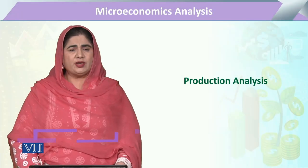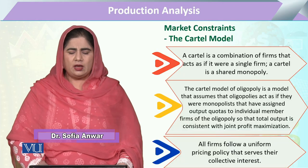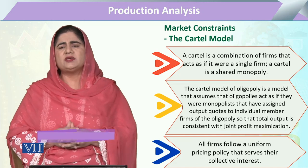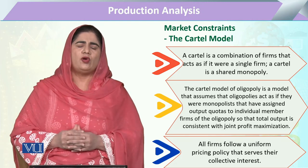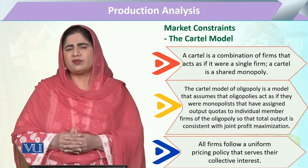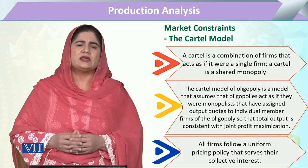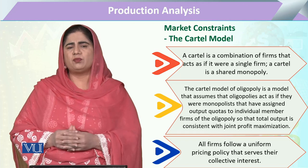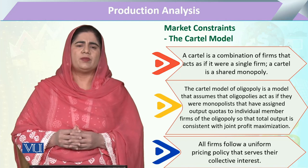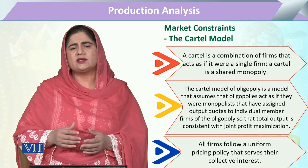In module 163, production analysis, we are going to study the cartel model under the market constraint. A cartel is basically one form of oligopolist structure where two, three, or more — but a small number of — firms act in a manner that they are the single supplier or single producer. Some firms collectively act to share their power and exert as one monopolist.